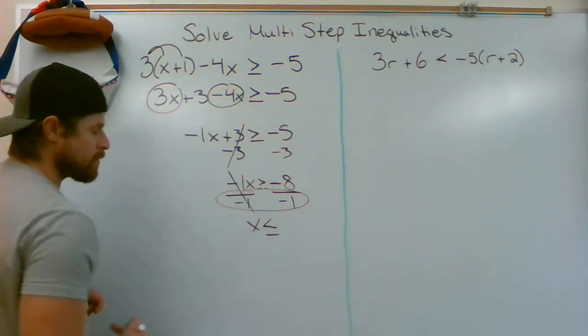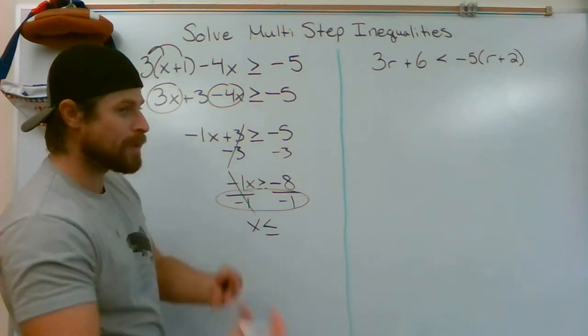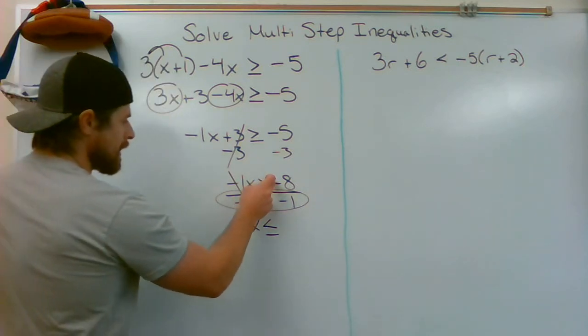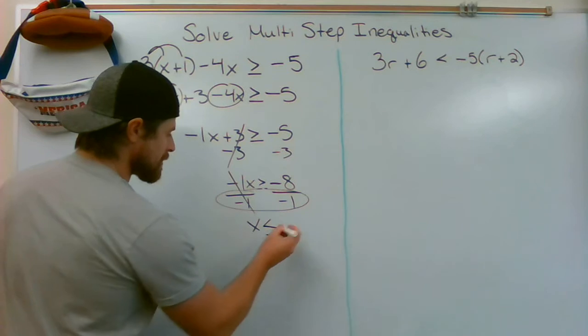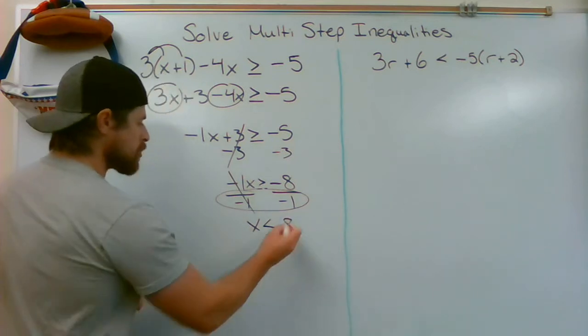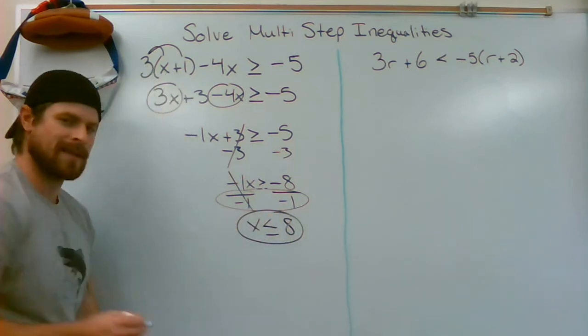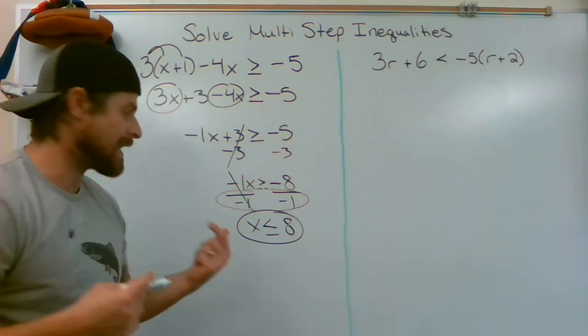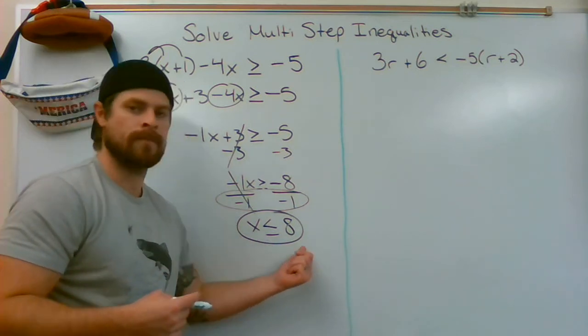My arrow's now pointing to the left. Negative 8 divided by negative 1 is positive 8. So I would read my final result as x is less than or equal to 8.